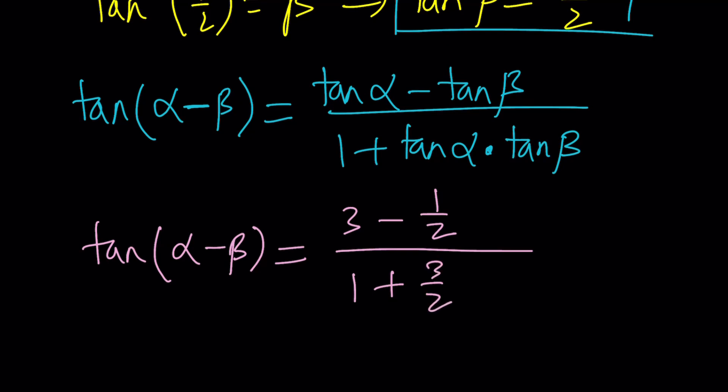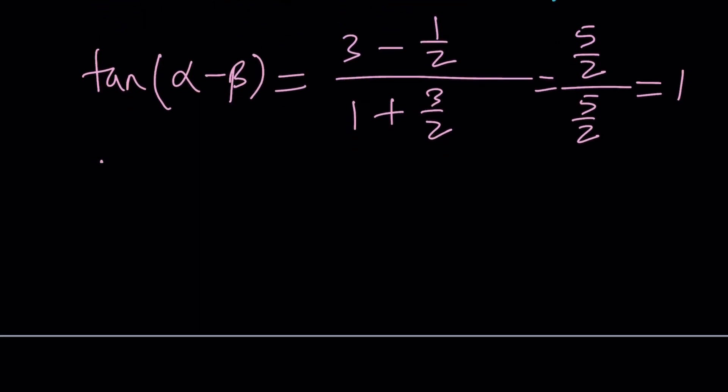Now the value is going to be a little surprising for you, hopefully. 3 minus 1 half is 5 halves, right? And 1 plus 3 halves is also 5 halves. So this ratio is actually 1. Now take a moment and think about this and what it means. Tangent alpha minus beta equals 1. Isn't that awesome? We got a real nice value. Of course, it's been arranged that way. But where do we go from here?